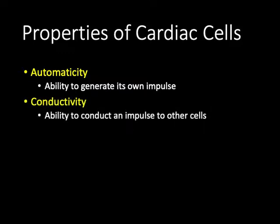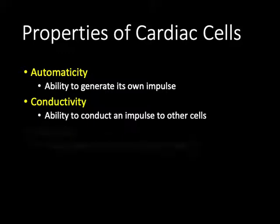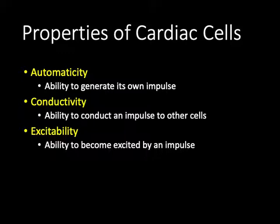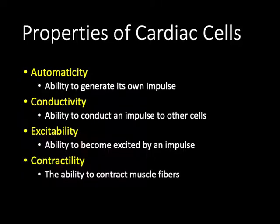The second property is conductivity — the ability of all cardiac cells to receive an impulse, transmit it, and pass it along to the next cell, which is critical for cardiac conduction. Third is excitability, closely related to conductivity: the ability to sit in a ready state and respond when an impulse arrives. The fourth is contractility — the ability to contract muscle fibers. Not all cardiac cells have this ability, but the vast majority do. These four — automaticity, conductivity, excitability, and contractility — are the critical properties of cardiac cells.